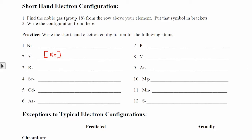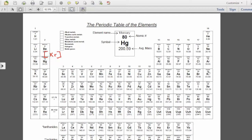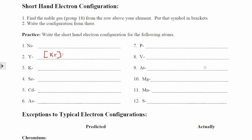From krypton, it would be 5s2 and then 4d1. By writing krypton in brackets, I'm implying I've already gone through all the steps: 1s2, 2s2, 2p6, 3s2, 3p6, 4s2, 3d10, 4p6. I've included all of that and now keep going. So it's [Kr] 5s2 4d1.